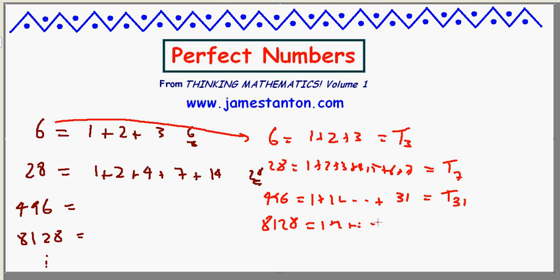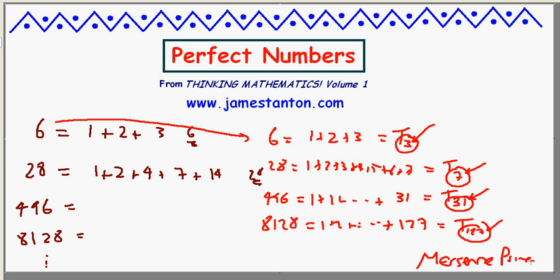8128 is 1 plus 2 plus 3 all the way up to 127, the 127th triangle number. And notice, 3 is 1 less than 4, a power of 2. 7 is 1 less than 8, a power of 2. 31 is 1 less than 32. 127 is 1 less than 128. In fact, these are all prime numbers that are 1 less than a power of 2. These are the Mersenne primes. So have a little look at the video on the Mersenne primes where I talk about those.